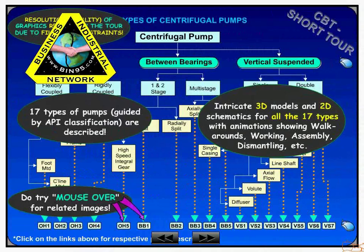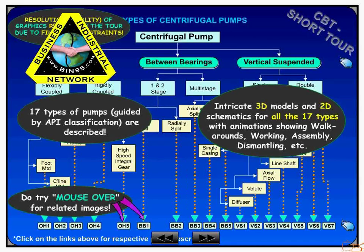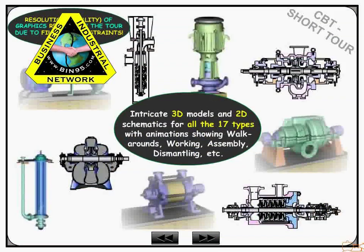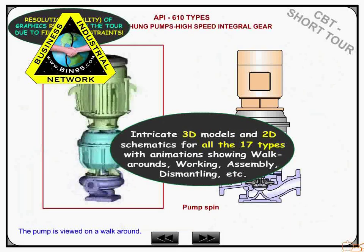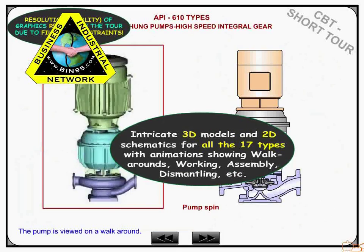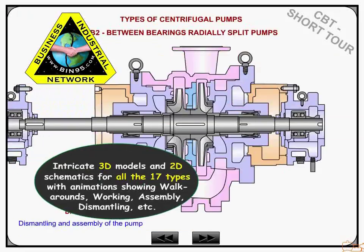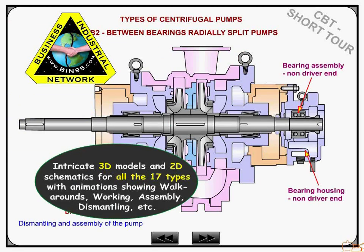Guided by the API classification, 17 different types of pumps are described. Intricate 3D models and 2D schematics for all 17 types include animations showing walk-arounds, working, assembly, and dismantling.